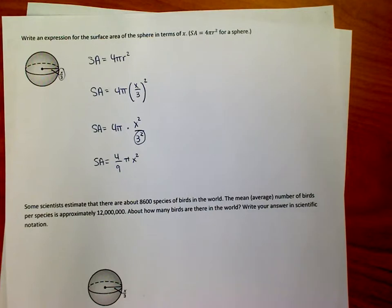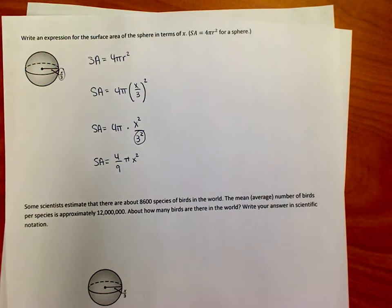And that's all they're asking us to do on this problem. Just move some stuff around and use the properties of exponents to kind of rewrite stuff to know that we have the x squared and the 3 squared.